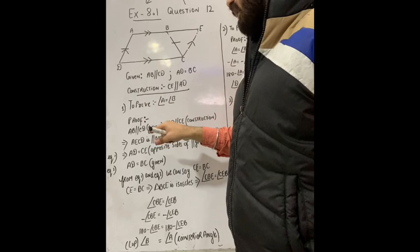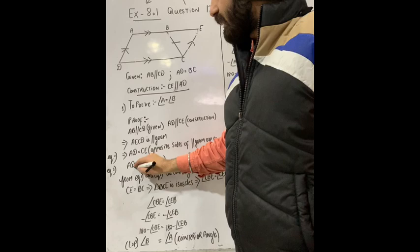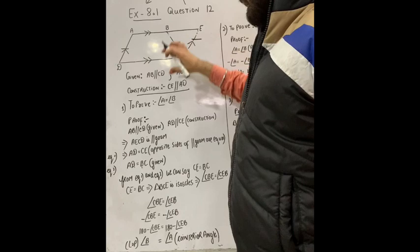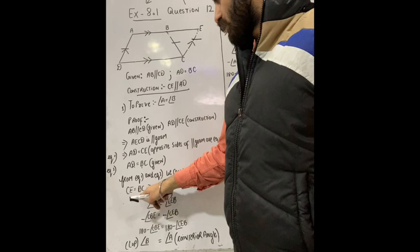Since AECD is a parallelogram, we can say AD is equal to CE. Also, AD is equal to BC, which is given. Therefore, CE is equal to BC.